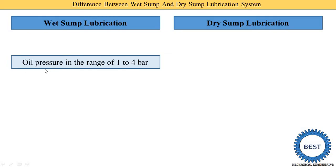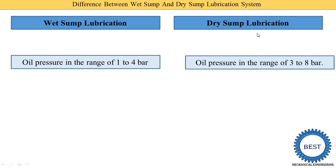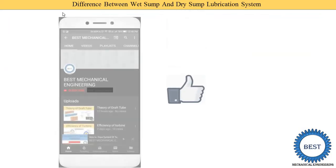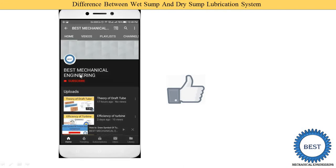The next difference is oil pressure. In a wet sump lubrication system, oil pressure is in the range of 1 to 4 bar. In a dry sump lubrication system, oil pressure is in the range of 3 to 8 bar.